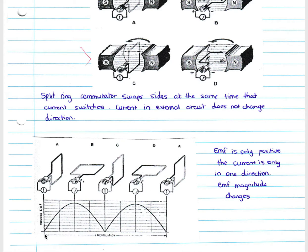The EMF is only positive and current is only in one direction. Our graph does not go below the x-axis, indicating the direction of current is always the same. We still have a peak where flux is zero, a minimum EMF where flux is maximum, and another maximum where flux is minimum. It is important to note that we now have no change in direction — only the magnitude changes, not the direction, unlike in the AC generator where both magnitude and direction change.